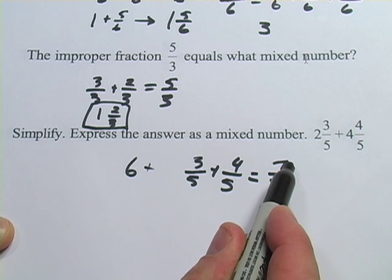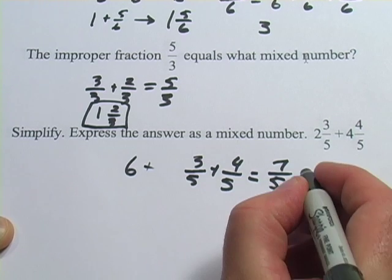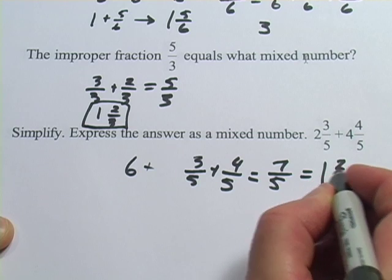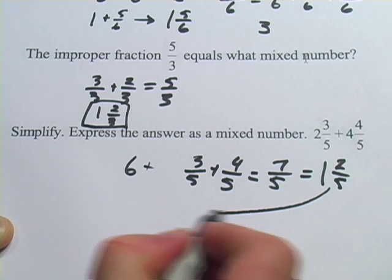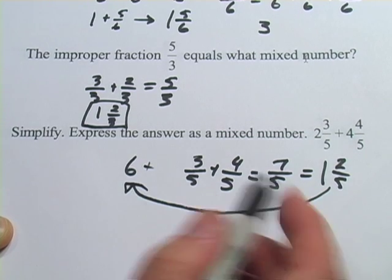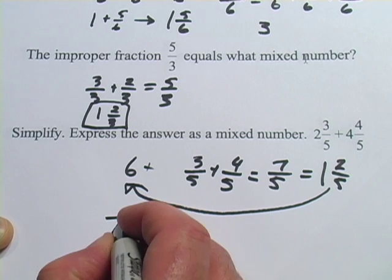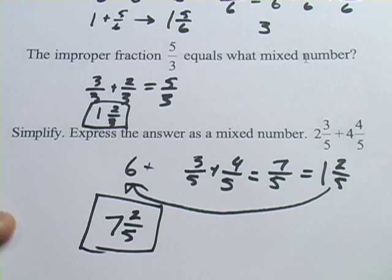So how many fives are in that 7? Well, there's 1 with 2 left over. So this would equal 1 and 2 fifths. And I want to add that back into my 6. 6 plus 1 is 7, and I've got my 2 fifths left over. That's probably the easiest way, at least for me, to do that one.